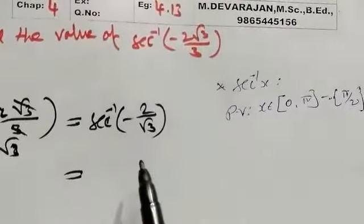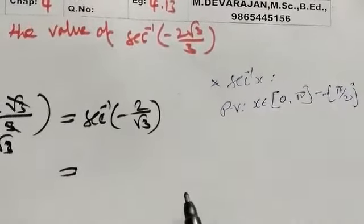Sec inverse of minus 2 by root 3 equals sec inverse of minus 30 degrees,